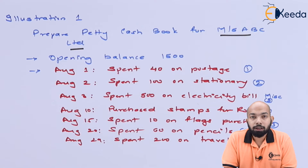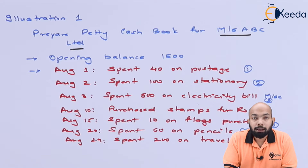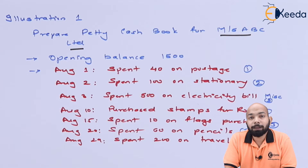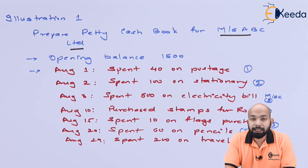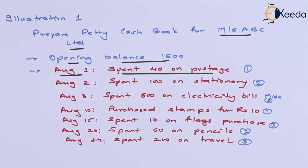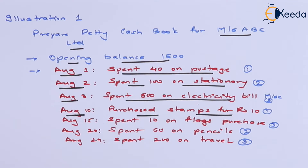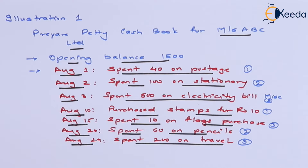We have to prepare a petty cash book for ABC Limited. The opening balance is 1,500 rupees — that means for the month's expenditures we had 1,500. Transactions done in the month of August are: 1st August — rupees 40 on postage; 2nd August — rupees 100 on stationery; 3rd August — rupees 500 on electricity bill; 10th August — rupees 10 on stamps; 15th August — rupees 10 on flags; 20th August — rupees 20 on pencils; 29th August — rupees 200 on travel.